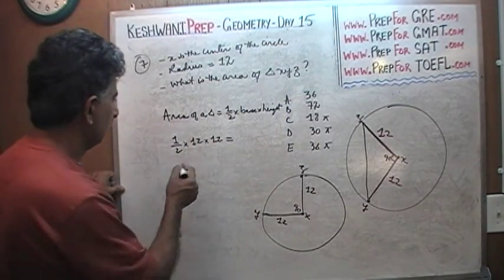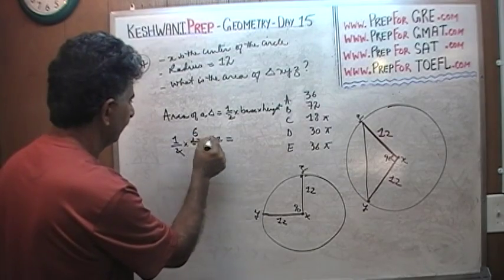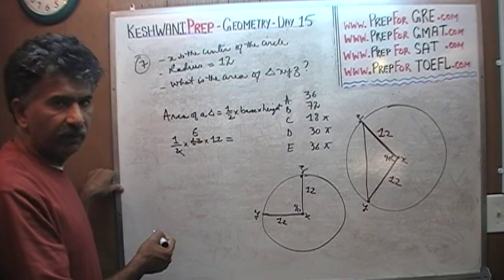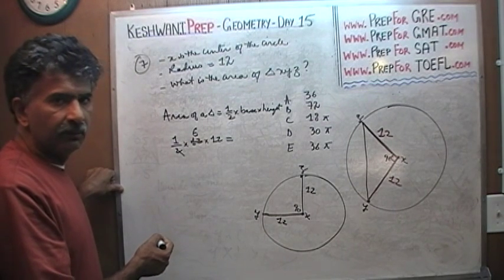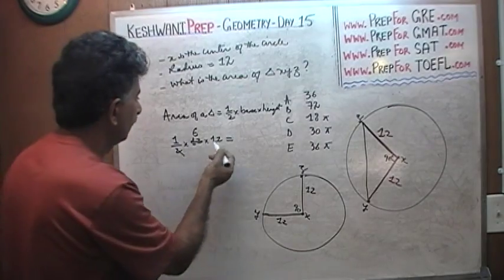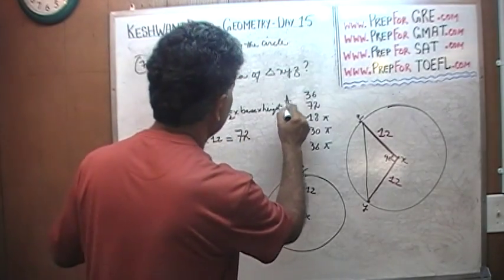But anyway, that's it. We're done. One-half base times height. Two goes into 12 six times, so it's just 6 times 12. 12 times 10 is 120, 12 times 5 is 60, so 6 times 12 is 72. Well, 72. Do we see it? Right there. The answer is B.